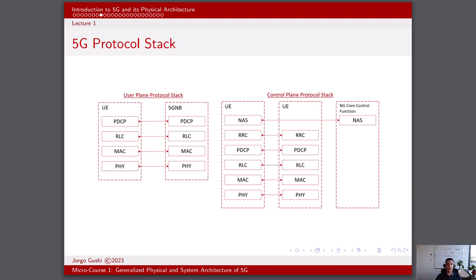The network layer, or layer 3, handles routing and forwarding of data packets through the network, using IP to encapsulate and route data between source and destination. The data link layer, or layer 2, provides error-free and ordered delivery of data frames between two directly connected devices. In 5G, the Ethernet protocol is commonly used in wired connections, while wireless connections utilize the Radio Link Control, or RLC, protocol for data link functionality. The physical layer, at the bottom of the stack, deals with actual transmission and reception of raw bit streams over the physical medium, such as radio waves or optical fibers, and handles modulation, encoding, and decoding of data signals.